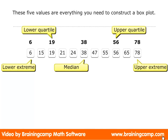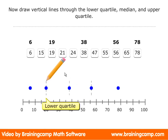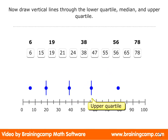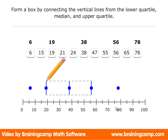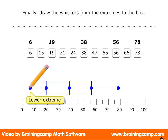To draw a box plot, begin by plotting points for the five values above a number line. Now draw vertical lines through the lower quartile, median, and upper quartile. Form a box by connecting the vertical lines from the lower quartile, median, and upper quartile. Finally, draw the whiskers from the extremes to the box.